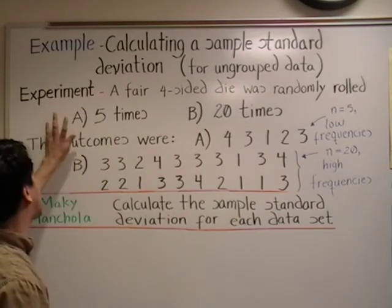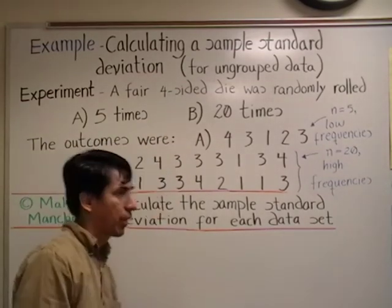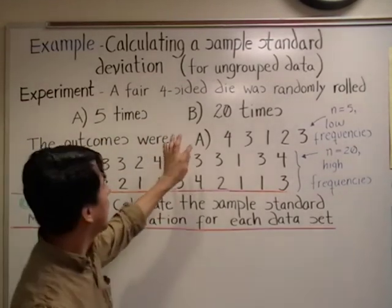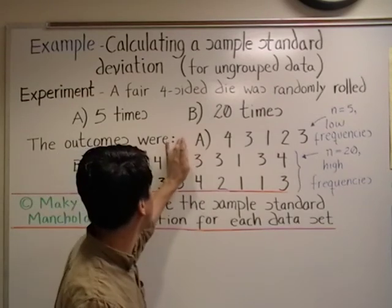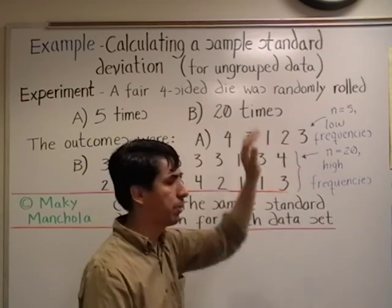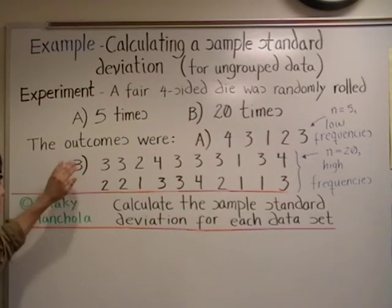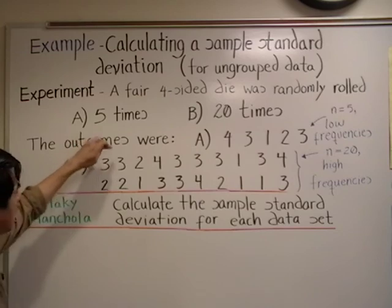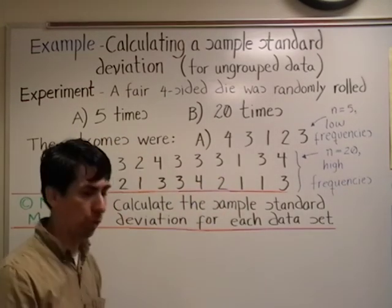It was rolled A) five times and B) twenty times. The outcomes were: in A, when we rolled it five times, we had four, three, one, two, three. When we rolled it twenty times (B), we got three, three, two, four, and so on as shown.